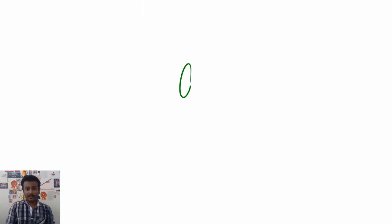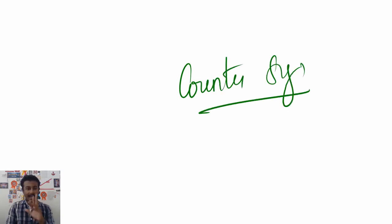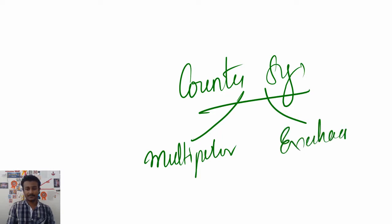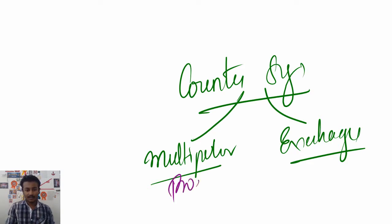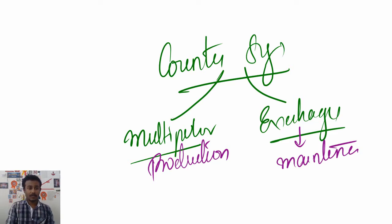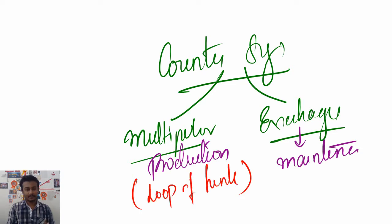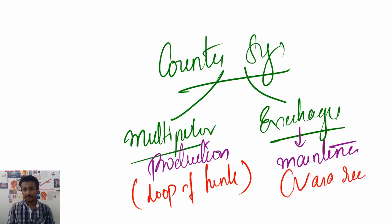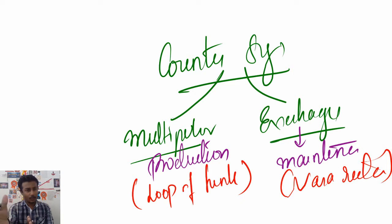It's not just one system. The counter-current system has two parts: the counter-current multiplier and the counter-current exchanger. The multiplier is involved with the production of the gradient, and the exchanger is responsible for the maintenance of the gradient. The multiplier mainly deals with the loop of Henle, which is responsible for production of the gradient. Maintenance is done by the vasa recta, which is the blood vessel that runs closely with the loop of Henle and nephron.